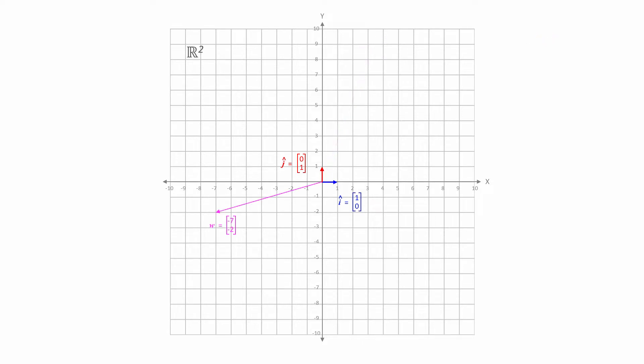And here's one more example for good measure. At a glance, we can see that w is a linear combination of the standard basis with the coefficients minus 7 and minus 2. Naturally.